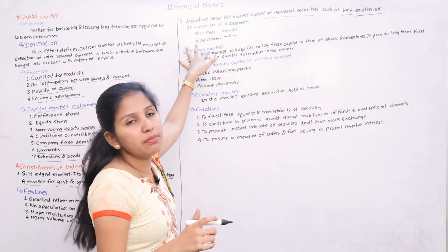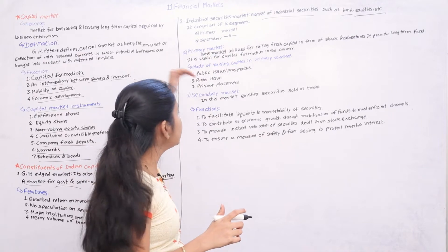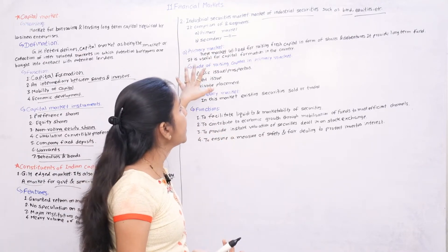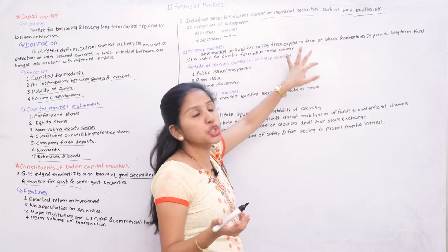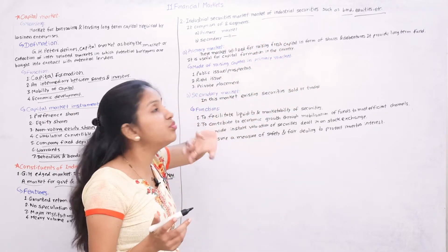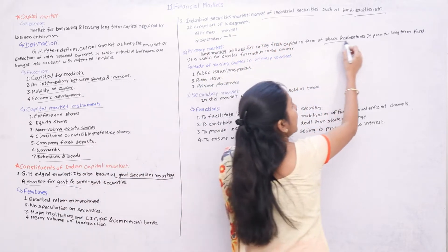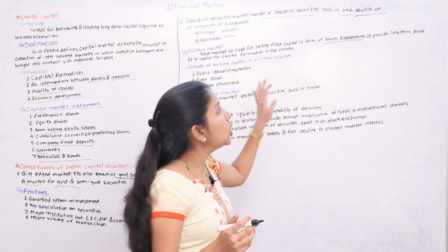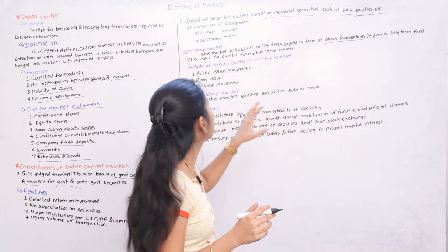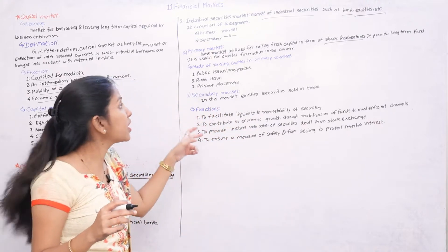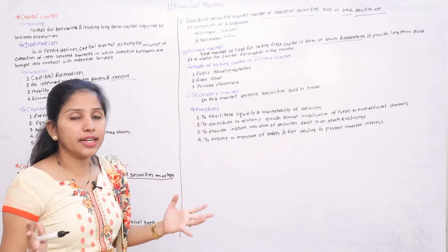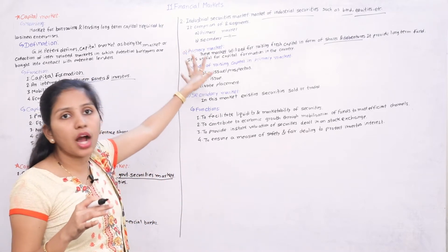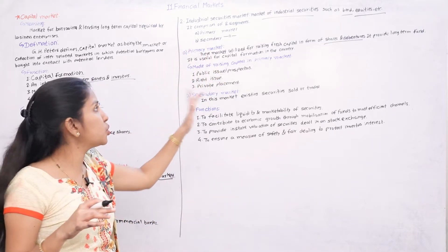The industrial securities market has two main segments: the primary market and the secondary market. The primary market is where fresh capital is raised in the form of shares and debentures. It provides long-term funds and is useful for capital formation in the country.